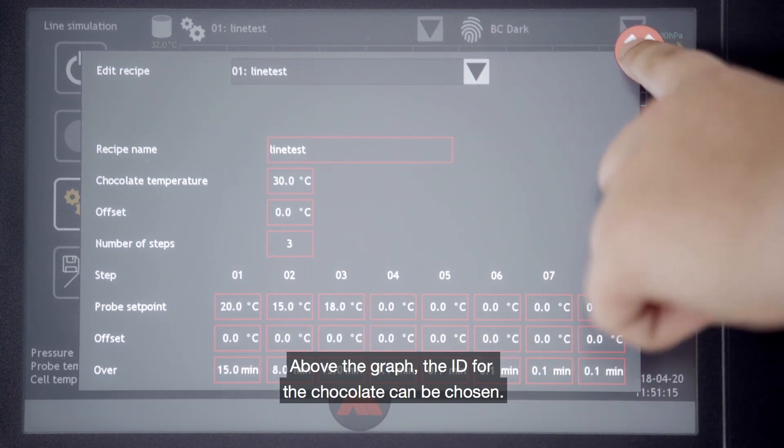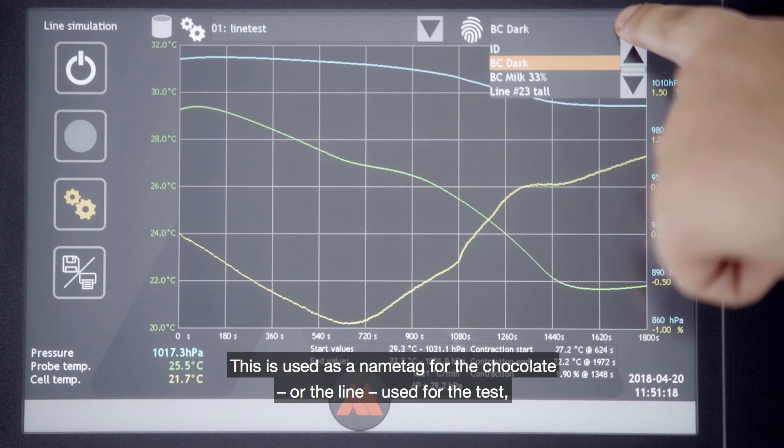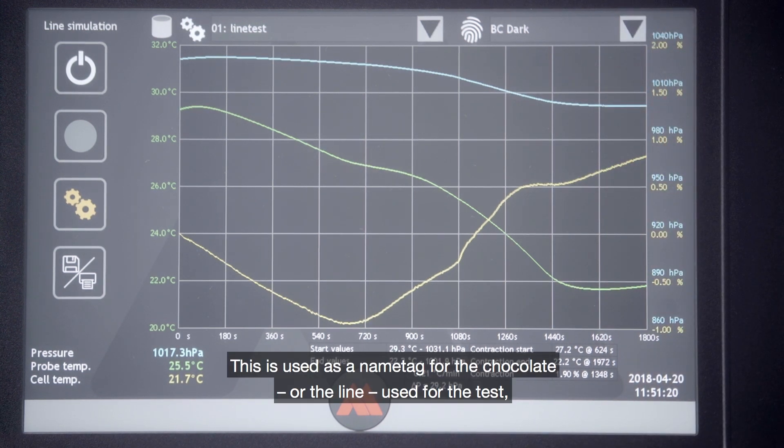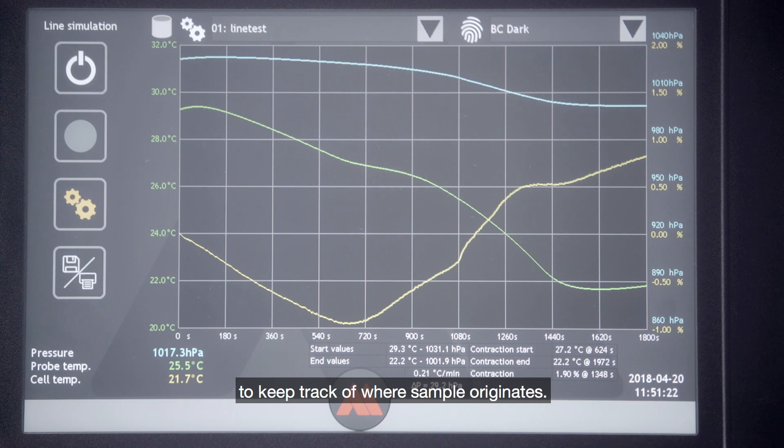Above the graph, the ID for the chocolate can be chosen. This is used as a name tag for the chocolate or the line used for the test to keep track of where the sample originates.